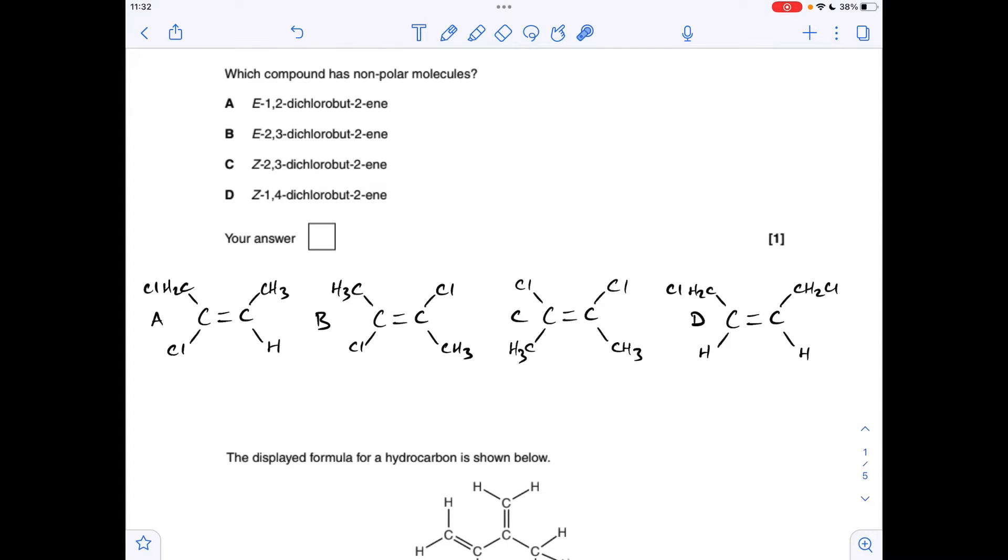Might as well, for revision purposes, explain C and D in terms of their names and structures. We've now got Z isomers, Z-2,3, so basically we want the chlorines, which are the priority groups on the Cs of the double bond. They need to be on the same side of the double bond now. You can see that this isn't symmetrical because you haven't got any symmetry that way. The chlorines are skewed on one side, the CH3 is on the other, so this will be polar.